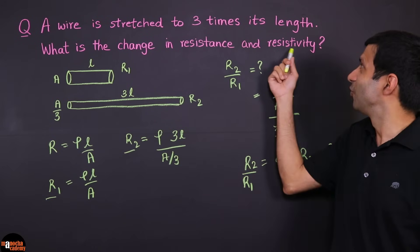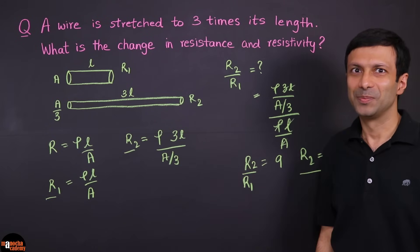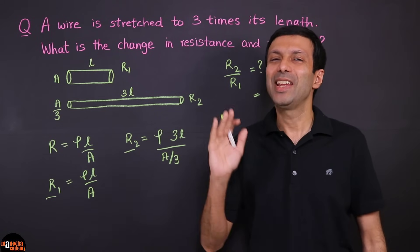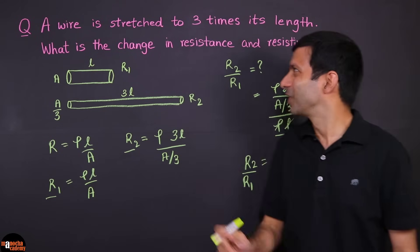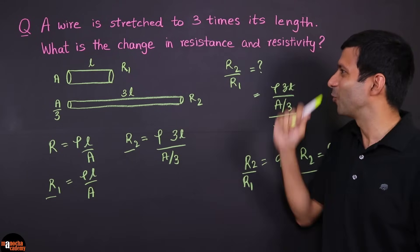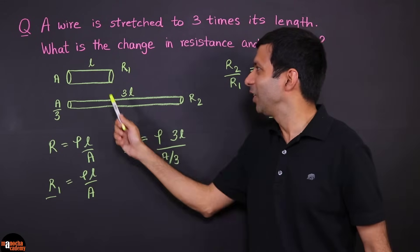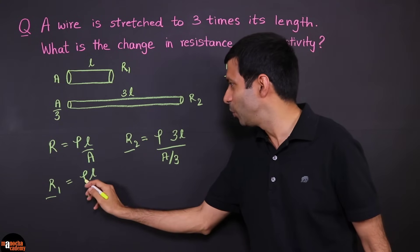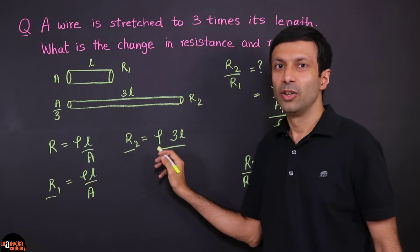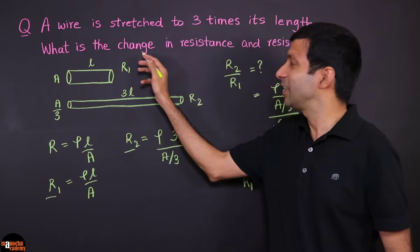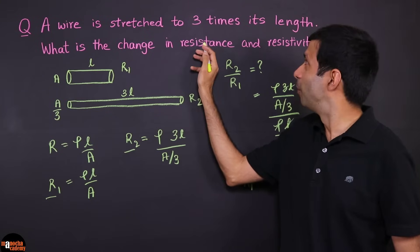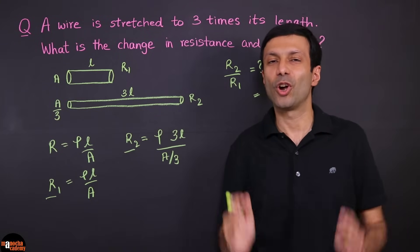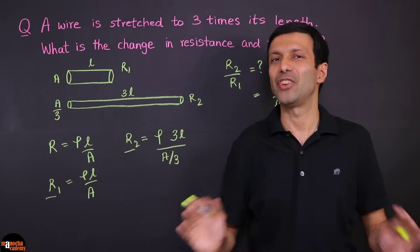Now what about the change in resistivity? There's going to be no change — that's the trick question. Because the material hasn't changed, and you can see we used the same Rho. So the resistance has changed by 9 times, but the resistivity of the wire does not change on stretching it.